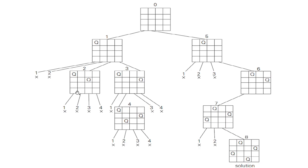Next, I have to place the third queen in the third row. In the third row I couldn't place in the first column. Second column — conflict. Third column — conflict. Fourth column — there is a conflict. So this path will not lead to the solution. I have to backtrack and follow a different path.